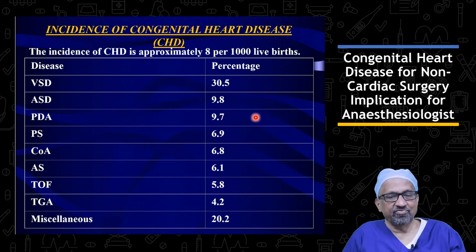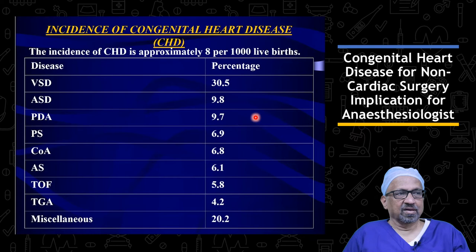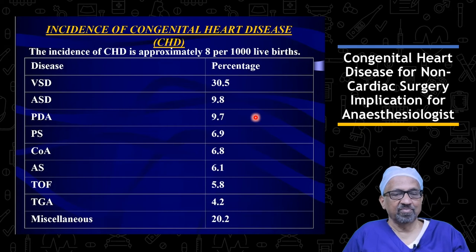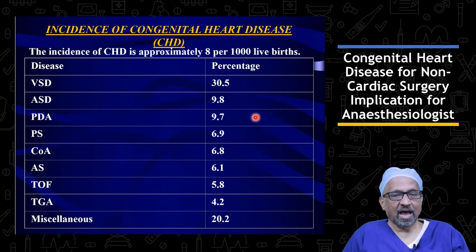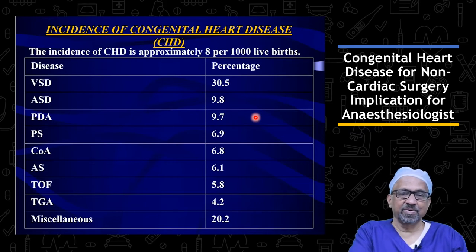If you include bicuspid aortic valve and also the infants which are lost because of natural causes, the actual incidence of congenital heart disease is much higher than what is depicted. This is also complicated by the fact that if parents choose to avoid the baby via prenatal echo, the baby may be removed before it is born. So the actual incidence is much higher than what is depicted.